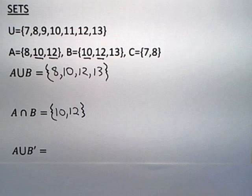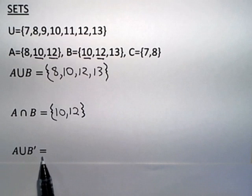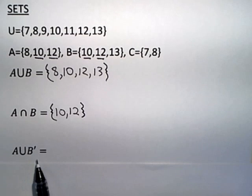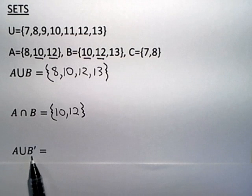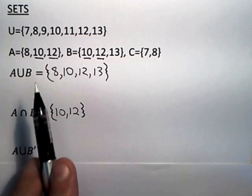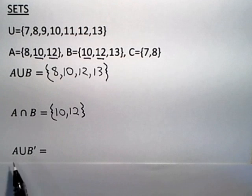Third question. A union B complement. Now, the complement of the set are the elements in the universal set that are not in the set that's being complemented. So here, I want to find these elements that are not in B but are in the universal set. So let's actually write this out.